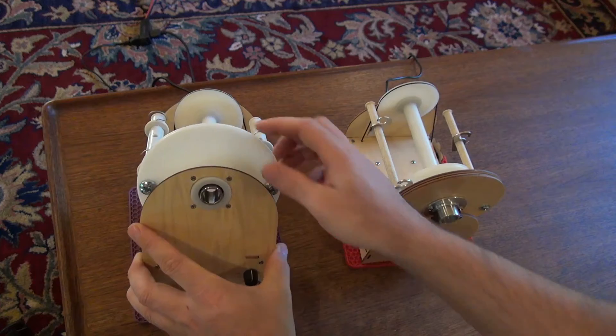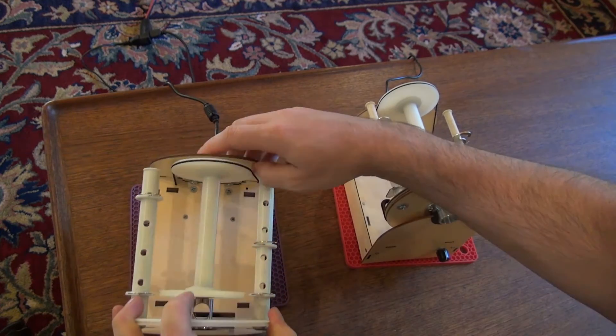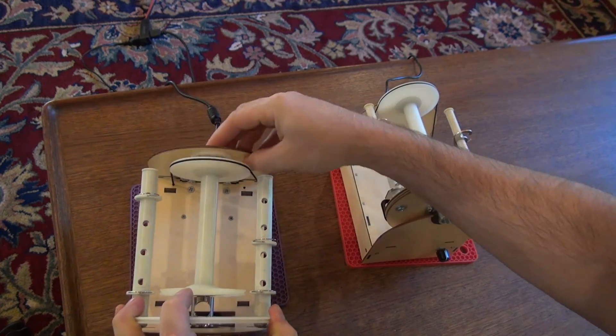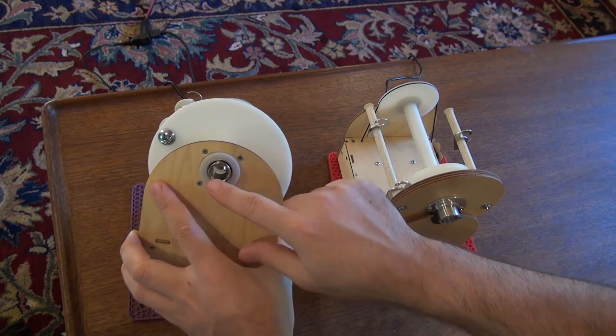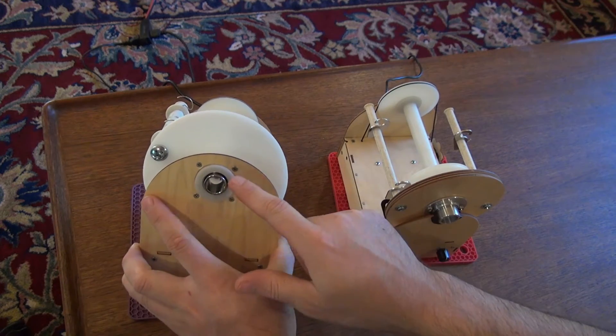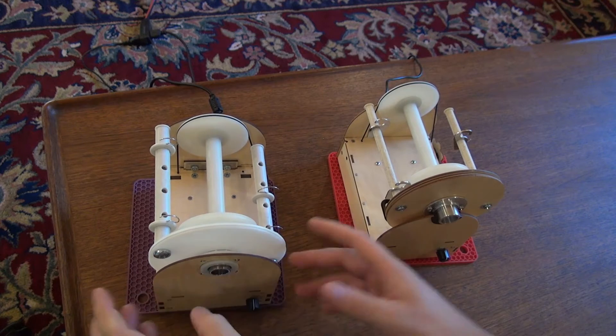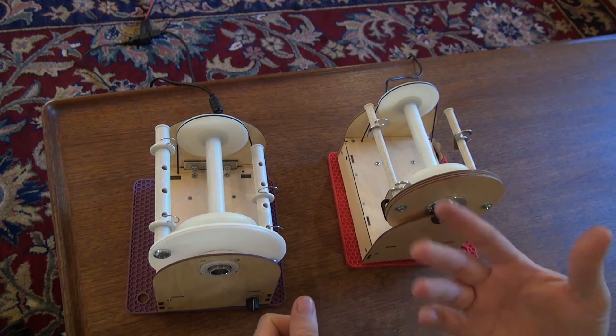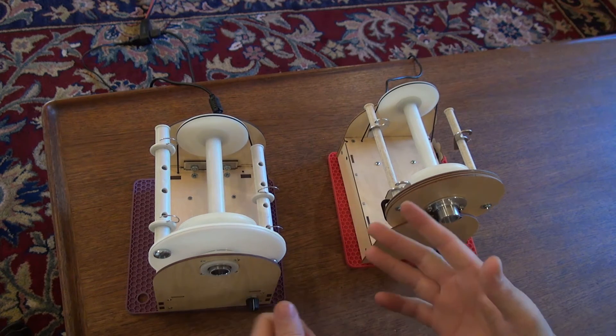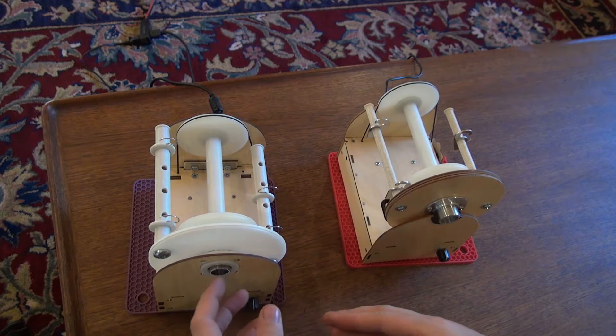I also wanted to point out that this version has bearings right here, and there are also some on the front that are a little harder to see, but there's a bearing there. So the flyer is suspended by bearings on this version, which is nice. That helps reduce the noise and makes everything last a lot longer.